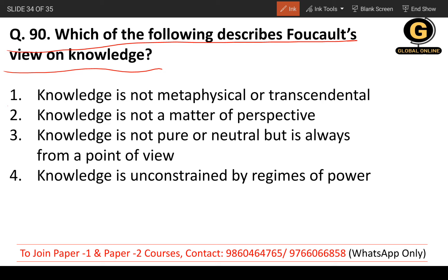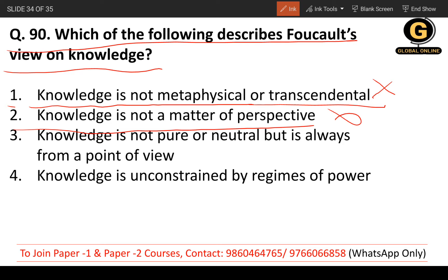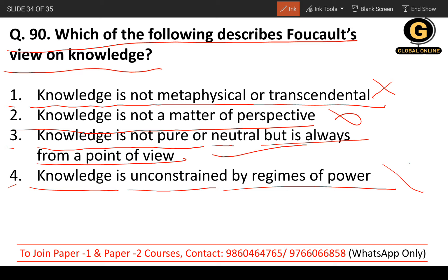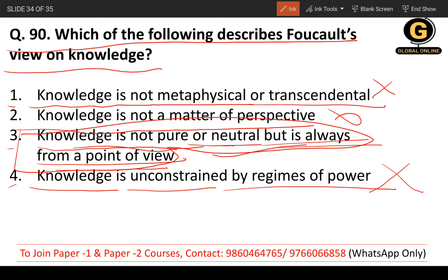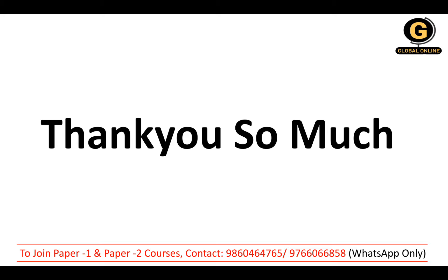Question 90: Which of the following describes Foucault's view on knowledge? Knowledge is not metaphysical or transcendental — not correct. Knowledge is not a matter of perspective — not correct. Knowledge is not pure or neutral but is always from a point of view — correct. Knowledge is unconstrained by regimes of power — not correct. The correct option is the third one. We have now covered 30 questions on literary theory and criticism. All the very best — keep revising, and pause the video if you need more time on any question. Thank you so much.